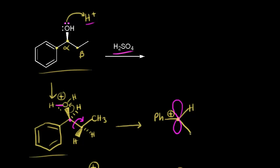Since there's free rotation around the sigma bond, I'm going to pick a particular conformation. I'll have one of the hydrogens parallel with the p orbital, another hydrogen over here, and the methyl group positioned accordingly. Let's look at a video to show how you get this conformation.